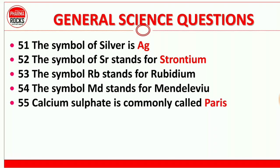Question 55: Calcium sulfate is commonly called plaster of paris. Jo hum kahtay hain plaster of paris, uska chemical name calcium sulfate hai. Jab fracture hota hai bone related, to jo material lagaya jata hai usko plaster of paris kehte hain. So plaster of paris kya hai? Calcium sulfate hai, chemical hai.